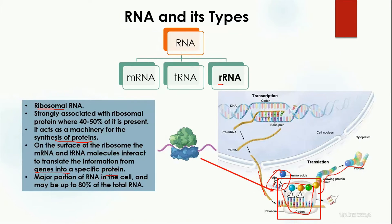On the ribosome surface, mRNA and tRNA molecules interact to translate information from genes into specific proteins. The major portion of RNA in the cell is ribosomal RNA, making up 80 percent of the total RNA — meaning the largest amount of RNA exists as rRNA. That was all about RNA and its types. If you have any questions, you can ask in the comment section. See you in the next video.